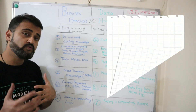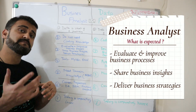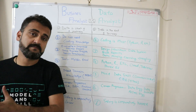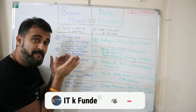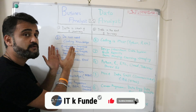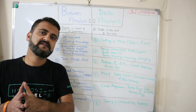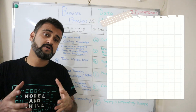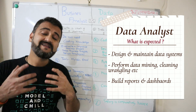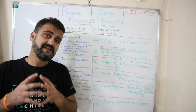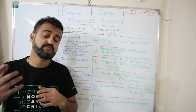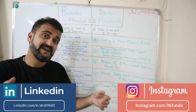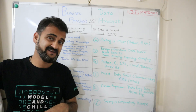The third difference is what is expected from each role. For a business analyst, the expectation is to evaluate and improve business processes, share business insights, and deliver new business strategy to improve the business — this is more on the business side of things. For a data analyst, you are needed to work on data systems, build reports, clean and extract data, and work on BI reports to build data insights — not business insights. Those data insights are then used by business stakeholders to take informed decisions, and you may even create those reports for your business analyst.